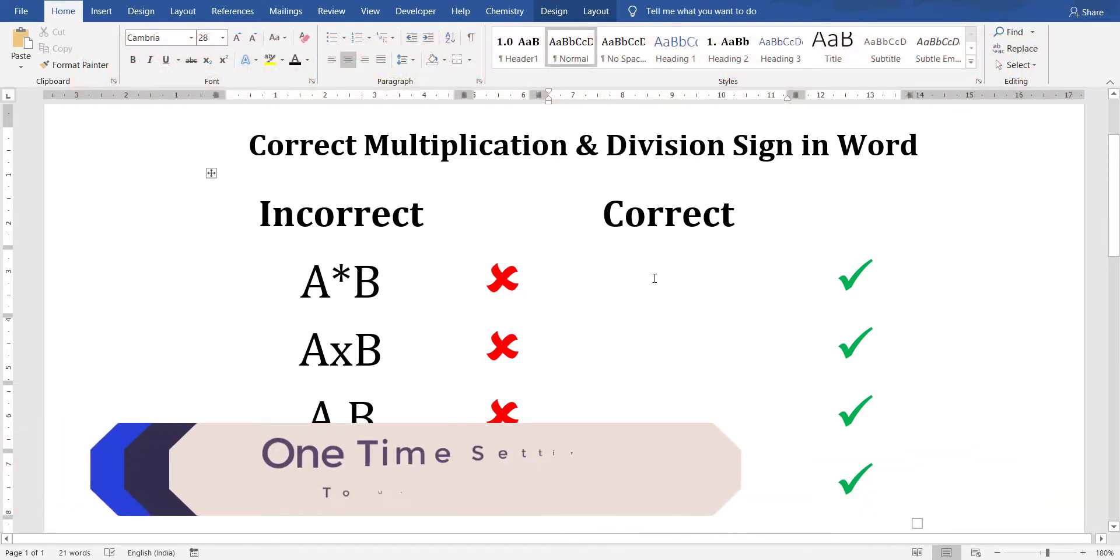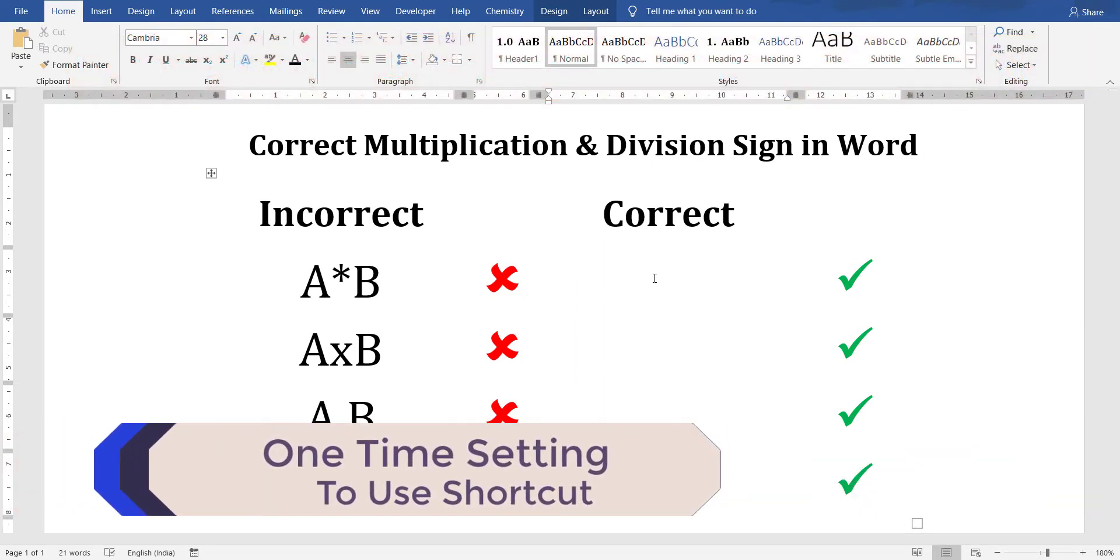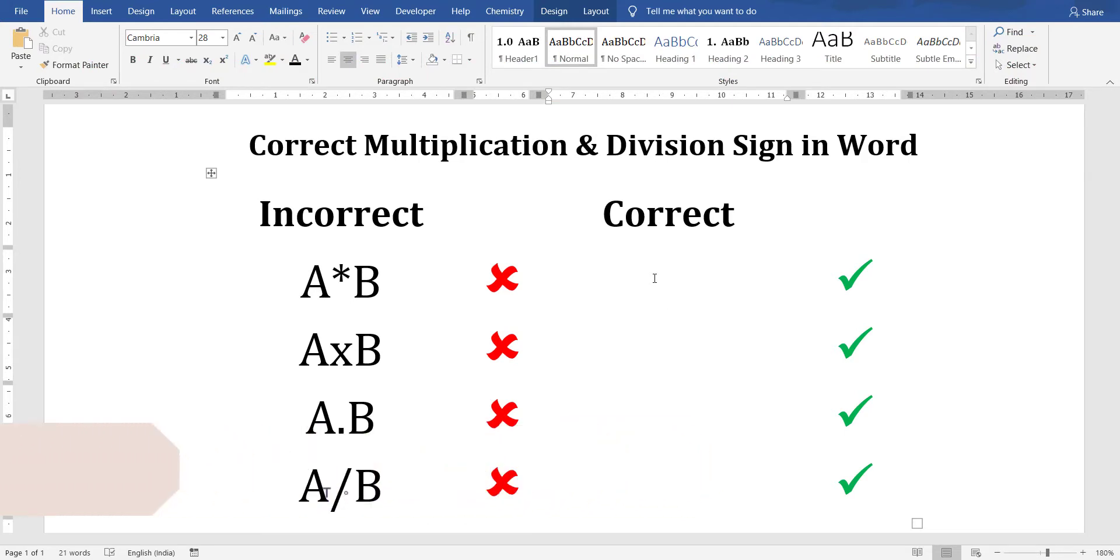Before using the correct way, I'd like to tell you that there is a shortcut for that, and to enable that shortcut you have to do a one-time setting. To do that setting, just go to File, then click on Options.